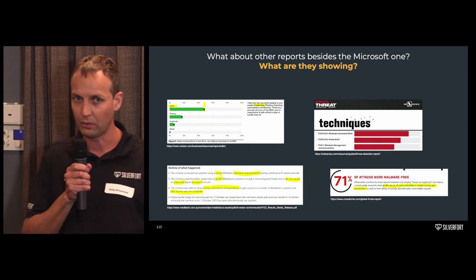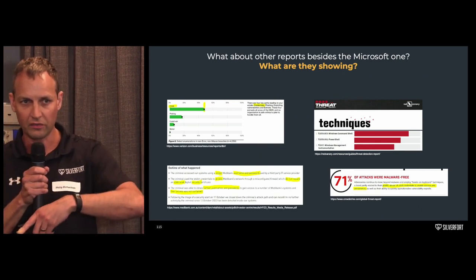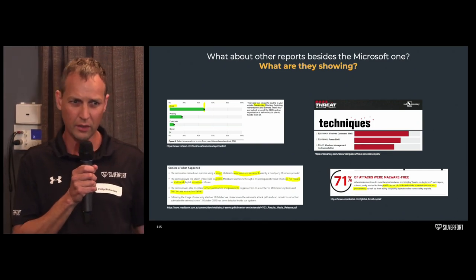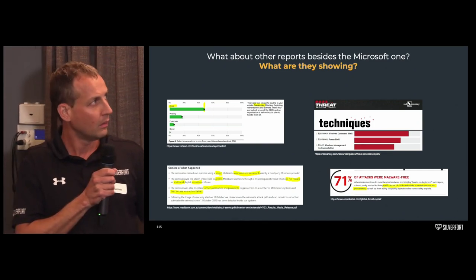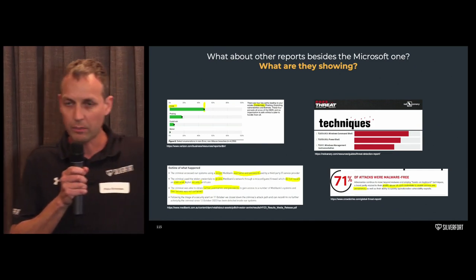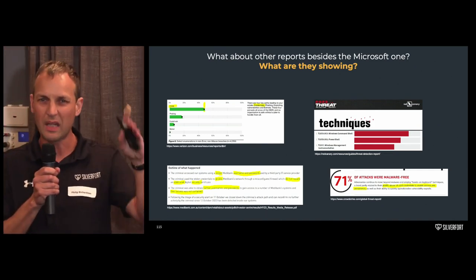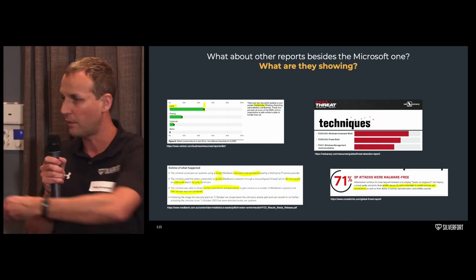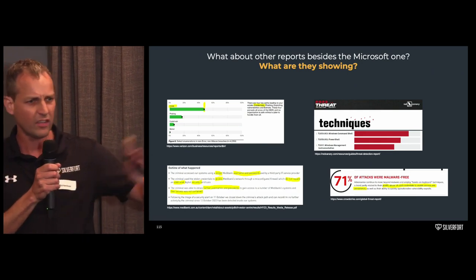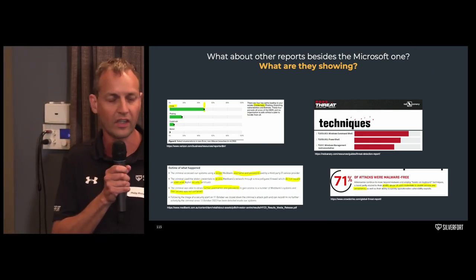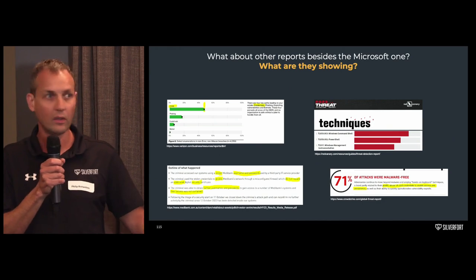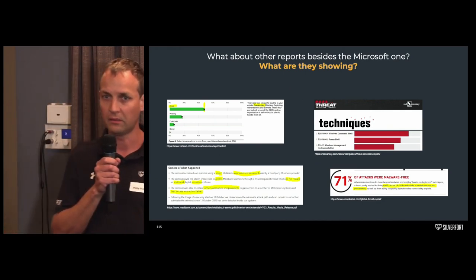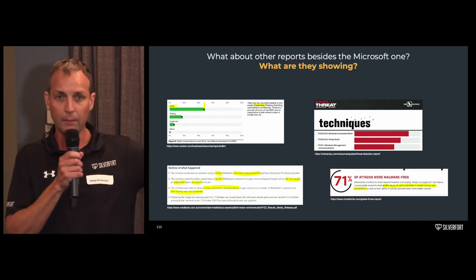We know MFA is an effective control and everybody knows how to use it. Everybody has modern identity platforms, SaaS applications, modern identity security controls — Okta, Ping. Fantastic technologies, very effective controls. The problem is there's a whole load of systems they don't cover. Again, legacy applications, on-prem applications.